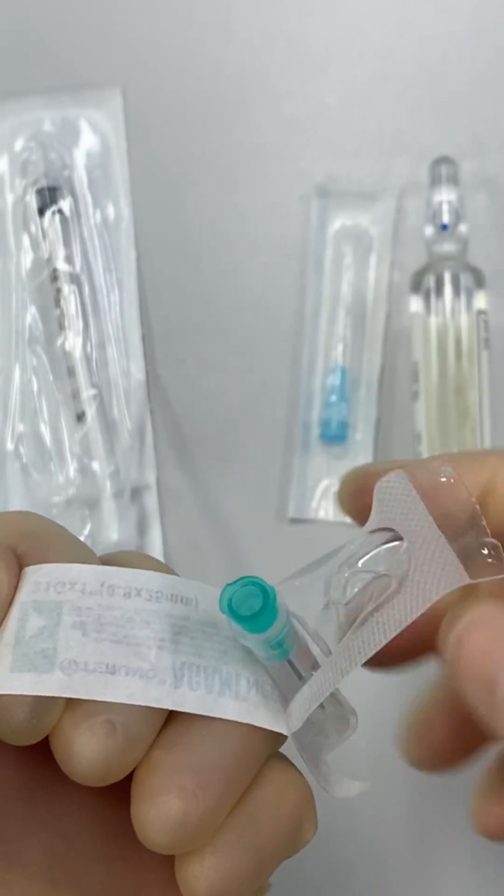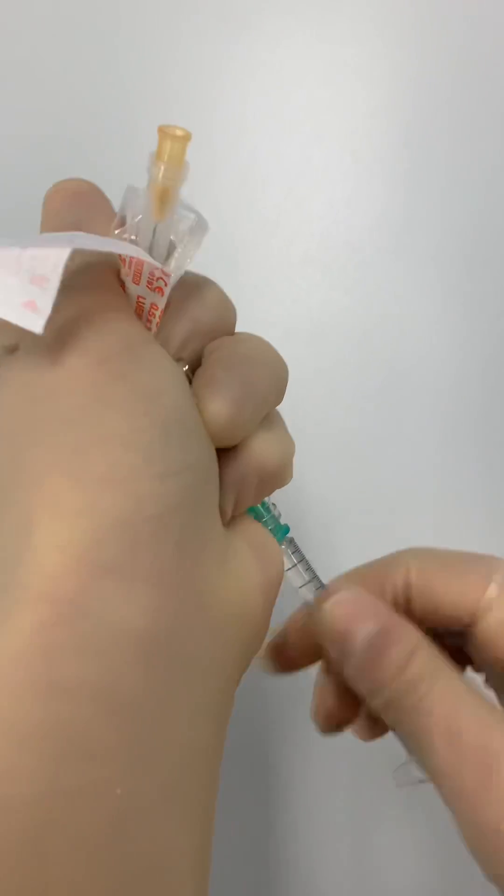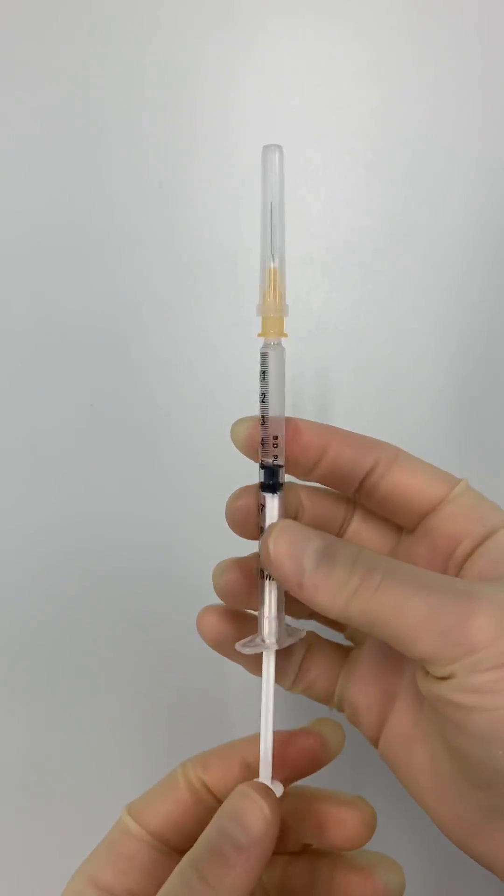And yes, to make things more confusing, smaller gauge needles have a bigger diameter. So an 18 gauge needle can be used to draw up medications, while a 25 gauge needle can be used to inject them.